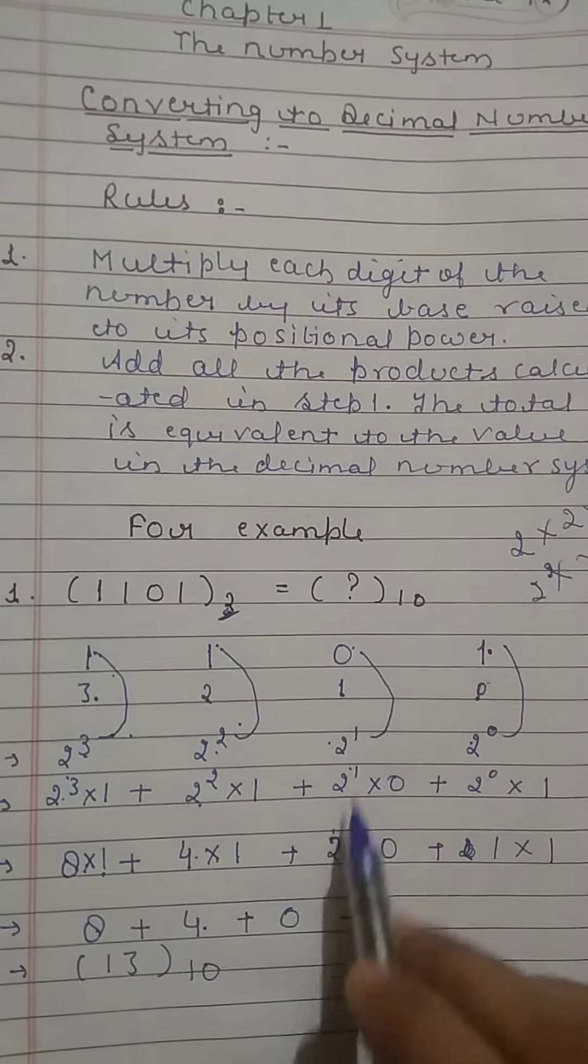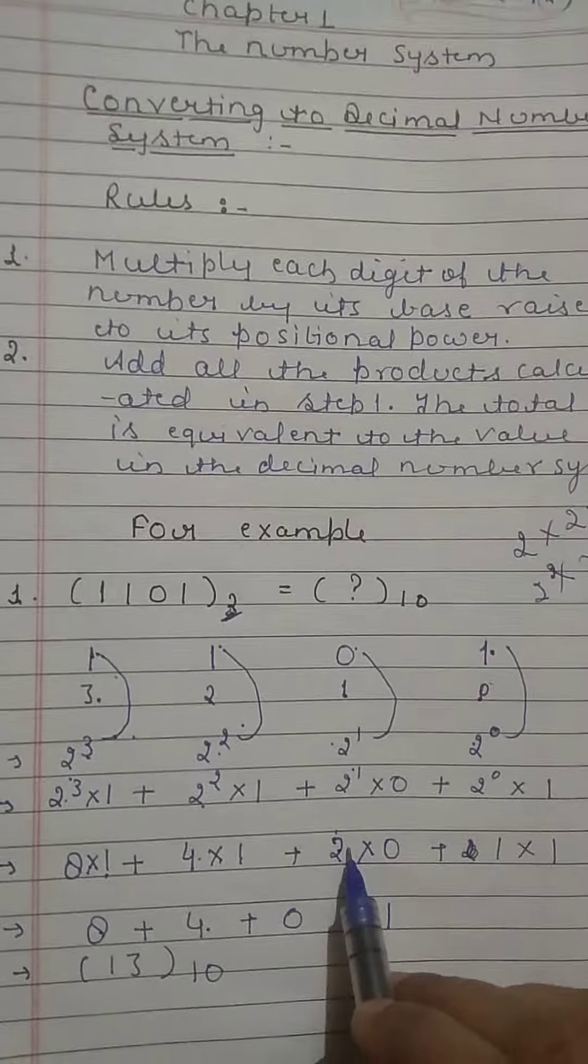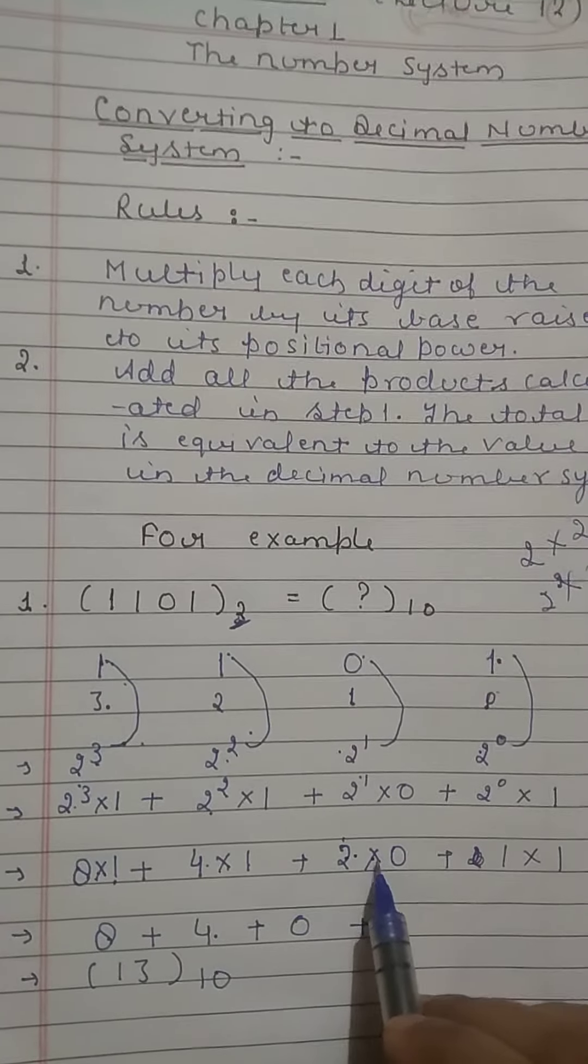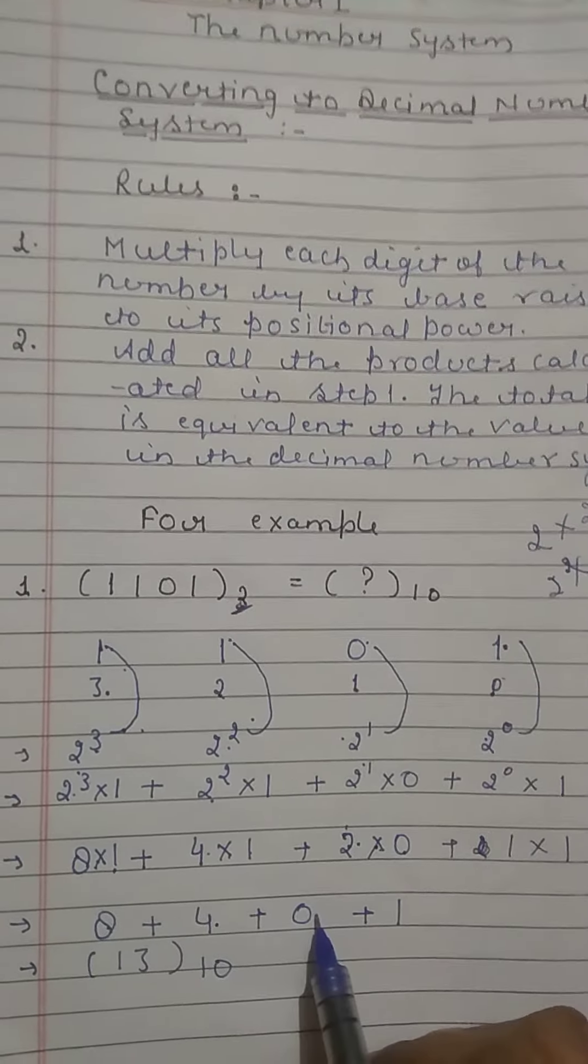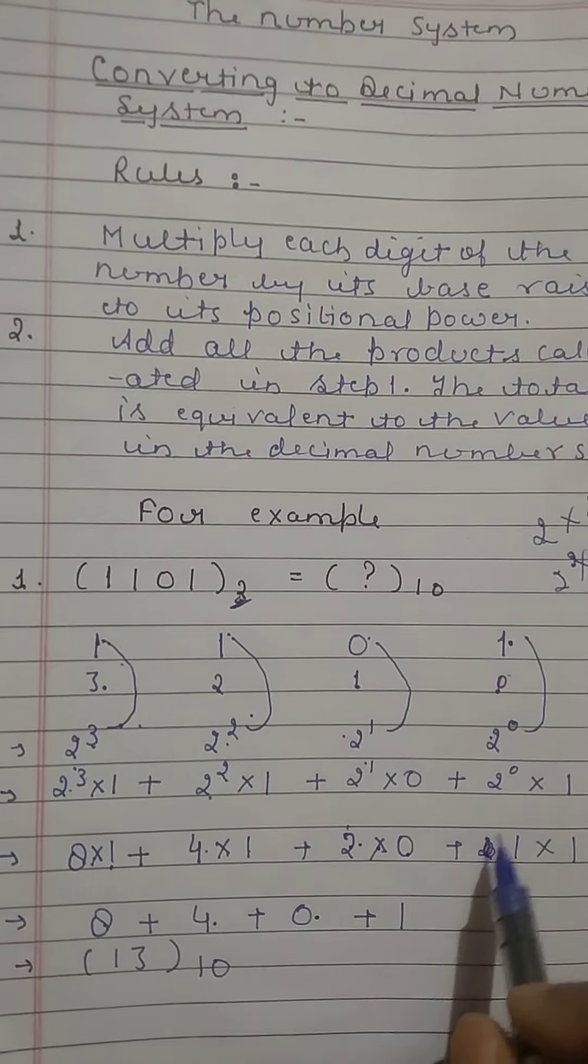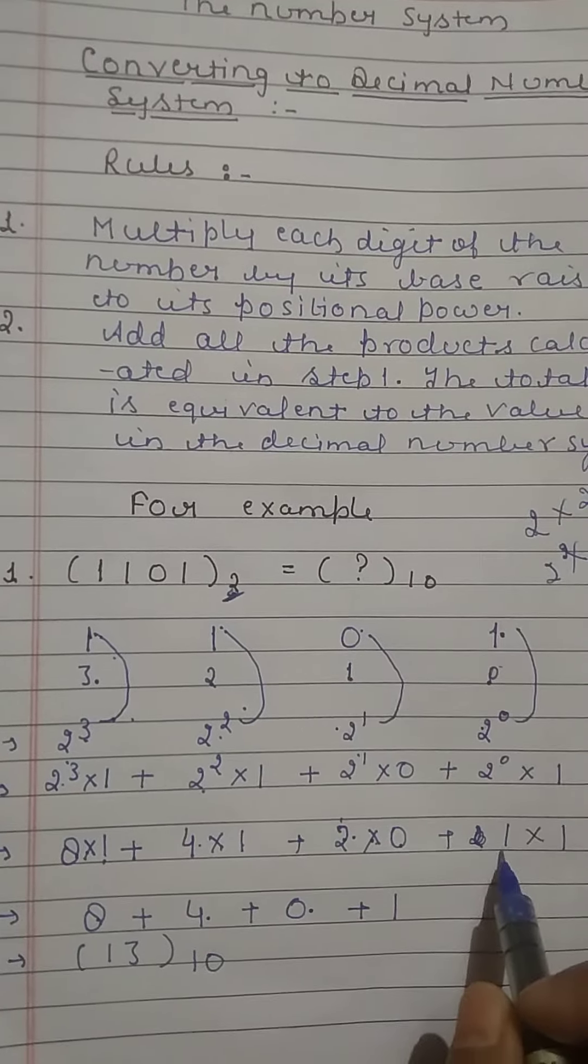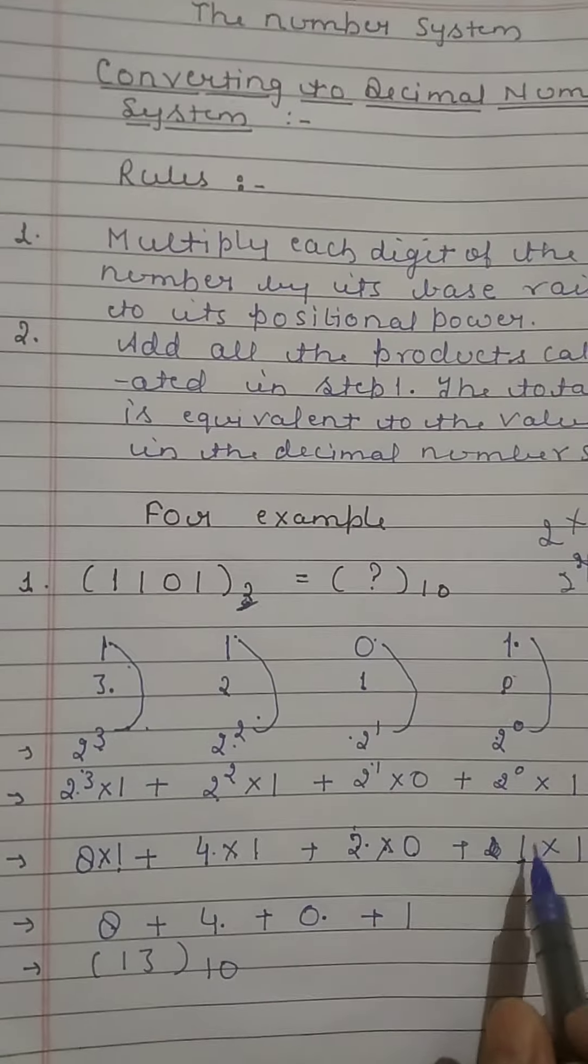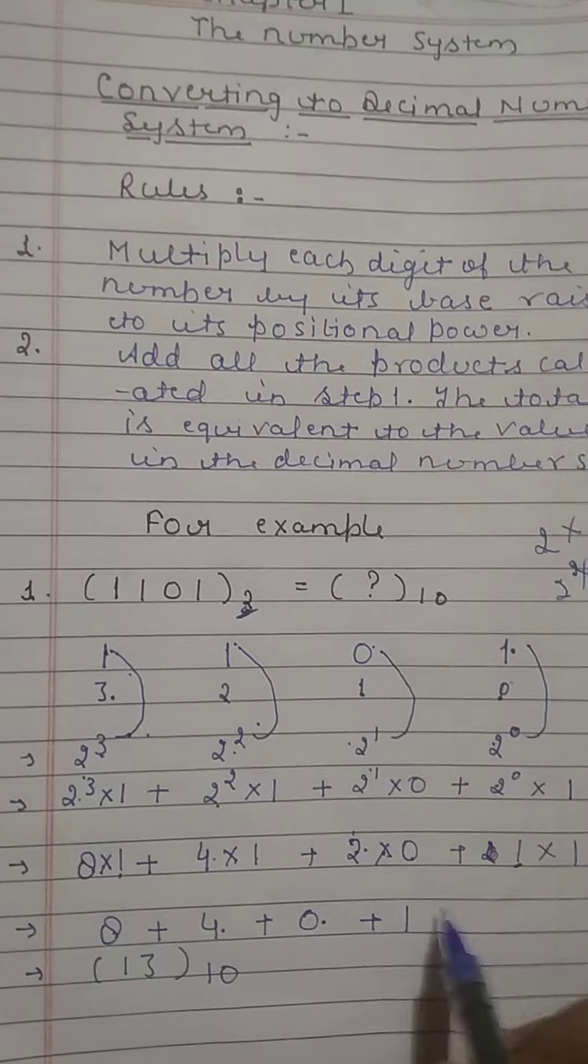2 to the power 1, which is 2, multiplied by 0 will be equal to 0. And always remember, if 0 is the power of any number, it will always be equivalent to 1. So 2 to the power 0 is equal to 1, into 1 it means 1.